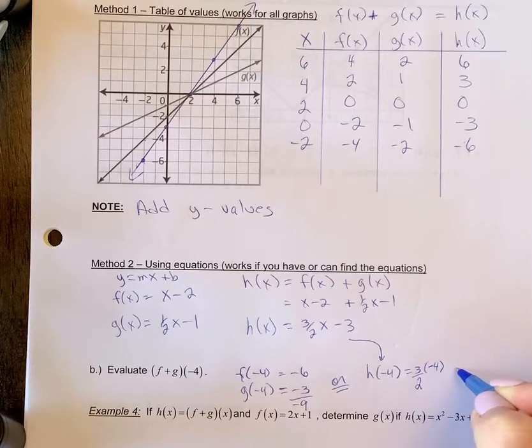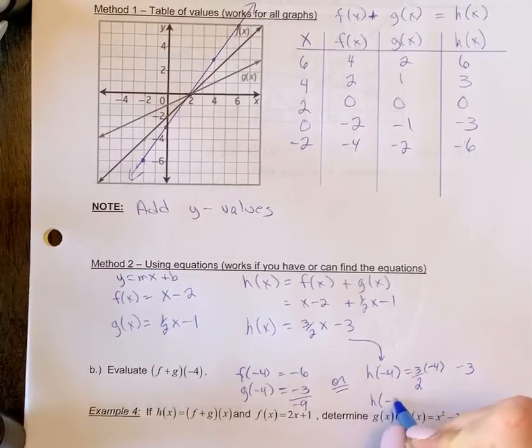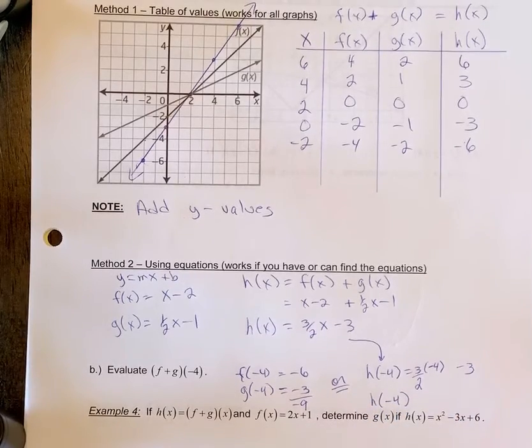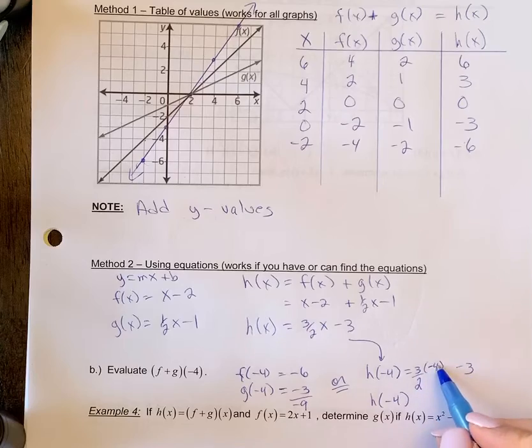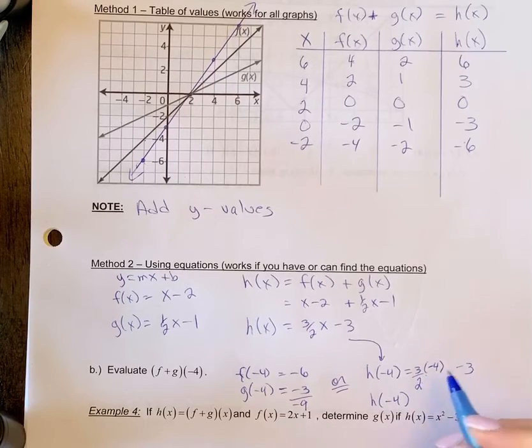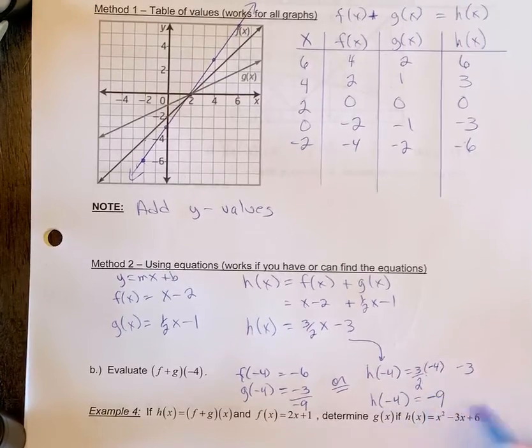And when we calculate that, you're still going to get negative nine. So when you plug this into the equation, you're going to get negative twelve divided by two, so negative six minus three, and you're going to get negative nine.